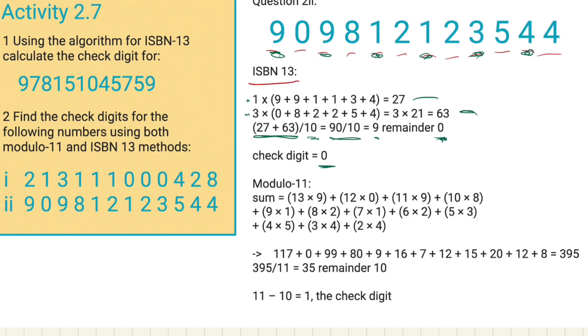Now, with modulo-11, as before, we multiply the first number by 13, second number by 12, 11, 10, 9, and we carry on until we get to 2, 2 times 4, and we have a grand total of 395. Again, we take the 11, modulo-11, and we divide 365 by the 11 to get 35. But it's 35, remainder 10.